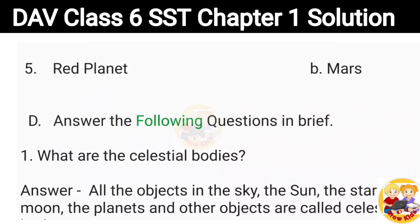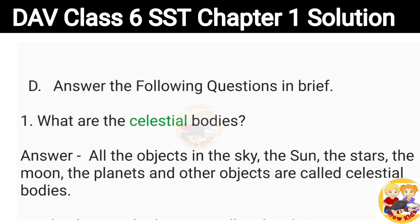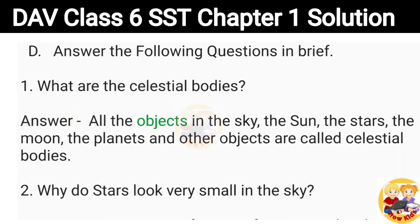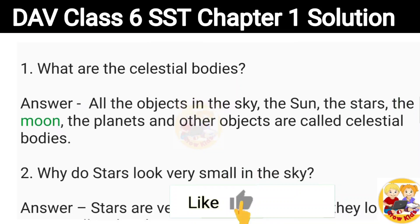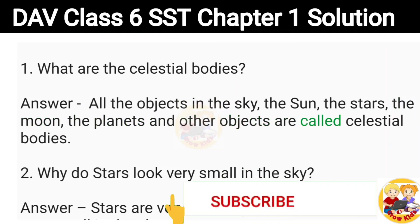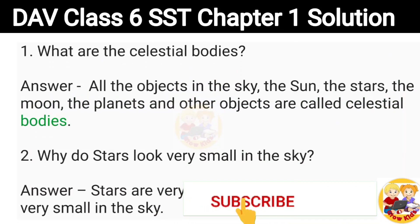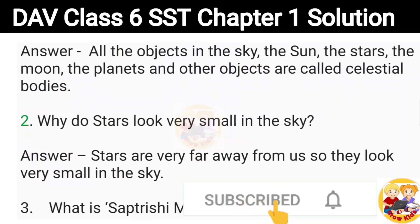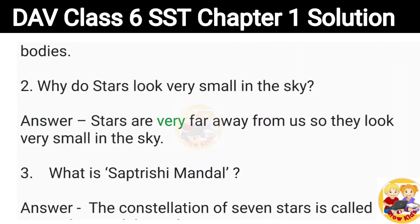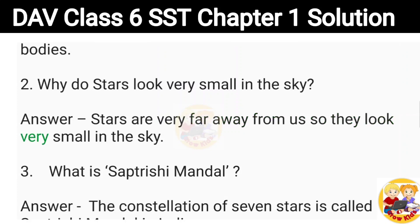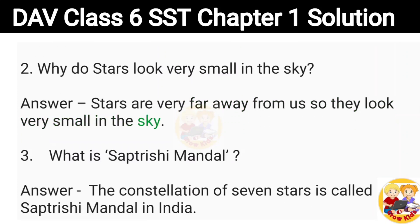Answer the following questions in brief. 1. What are the celestial bodies? Answer: All the objects in the sky — the Sun, the stars, the Moon, the planets and other objects are called celestial bodies. 2. Why do stars look very small in the sky? Answer: Stars are very far away from us, so they look very small in the sky.